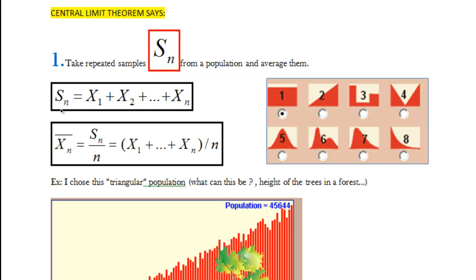So a bit of mathematical notation, s small n stands for sum of some observations from x1 to xn and x-bar stands for average. So we take the sum, we divide it by number of observations and we get an average. So let's repeat one more time, take repeated samples from population and average them.